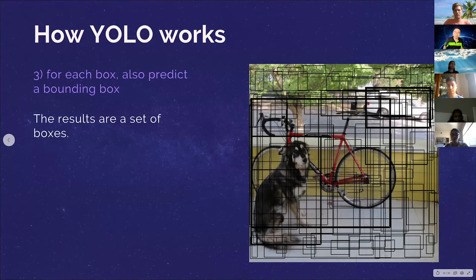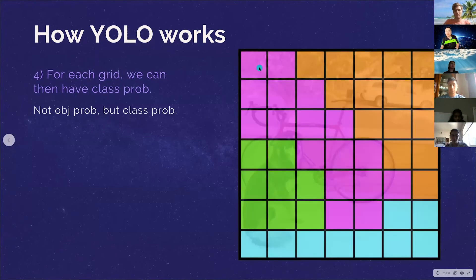Then what do we do is we can do a voting, right? So for each grid, right, we can say, oh yeah, maybe most of the boxes they touch upon, they contain this object. Okay, I'm going to classify them having this class probability. So remember, this is not about object probability anymore. This is about class probability.